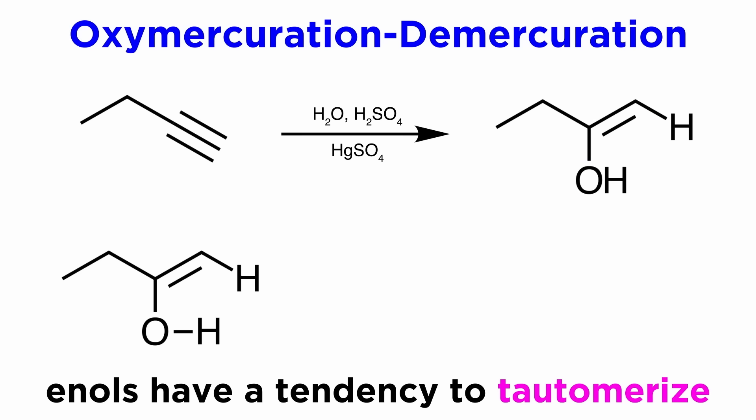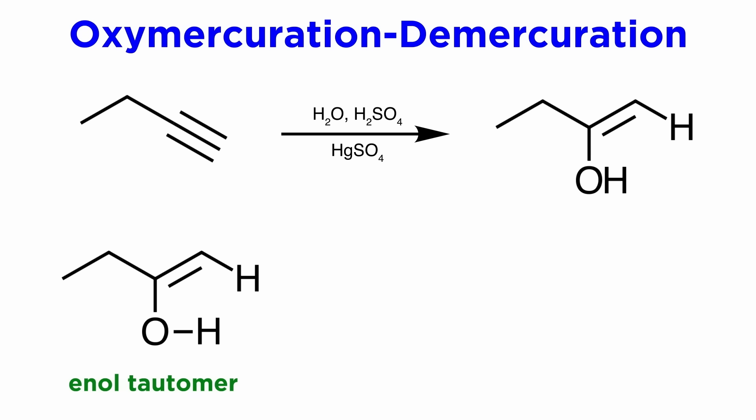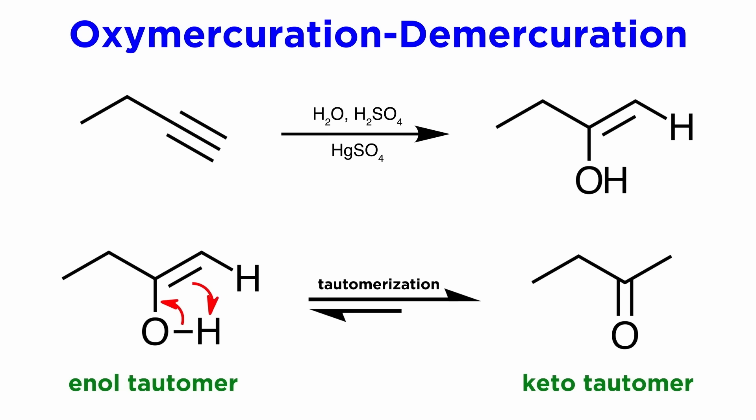The interesting thing about enols is that they tend to undergo a process called tautomerization. This is the enol tautomer, and it will interconvert with the keto tautomer automatically, simply by transferring a hydrogen to the adjacent carbon. This is not considered an actual chemical reaction, but simply a rearrangement, like a carbocation rearrangement. The keto tautomer is favored for thermodynamic reasons, as the bond energies are greater in this configuration due to the more polar and thus more stable carbon-oxygen bonds, thereby bringing the system to a lower energy.